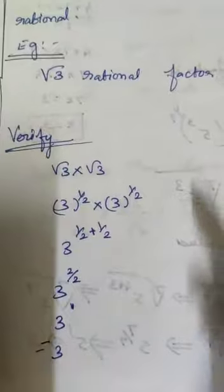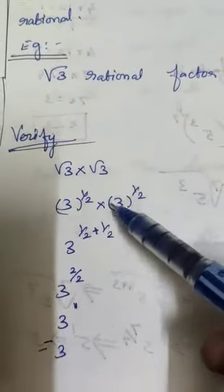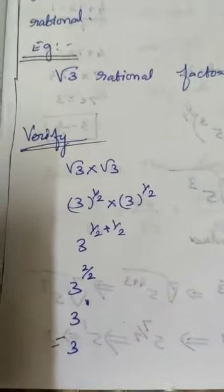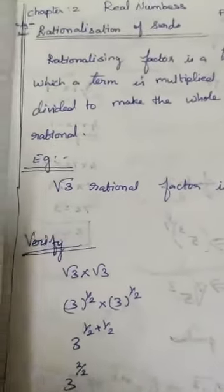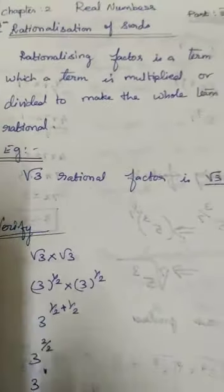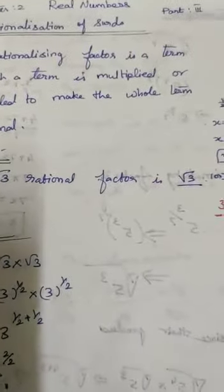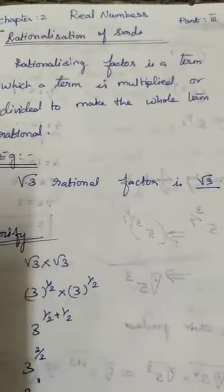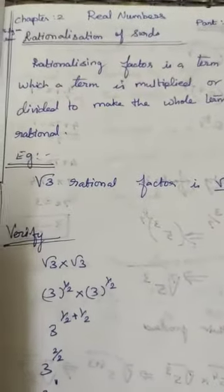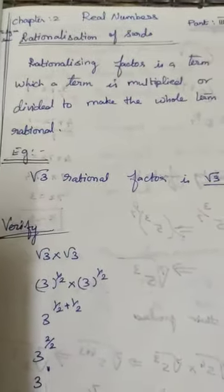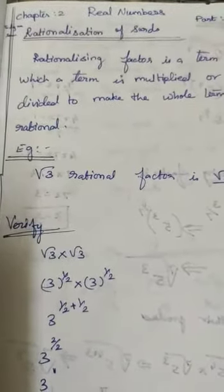So irrational changed to rational. Now do you understand? So once again I tell you: rationalization of surds means rationalizing factor is a term which is multiplied or divided to make the whole term rational. So first understand the concept.